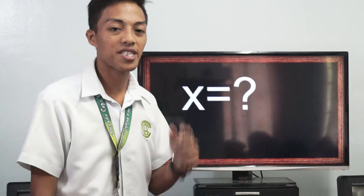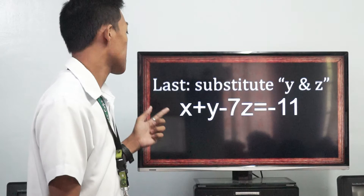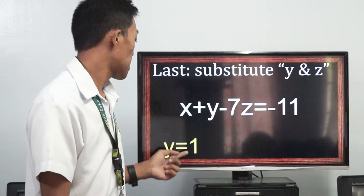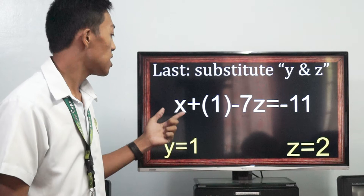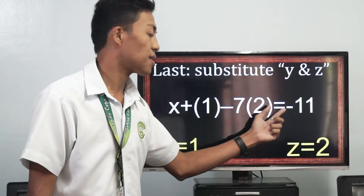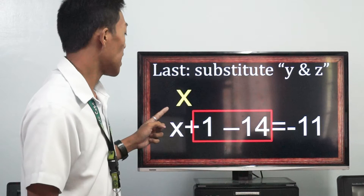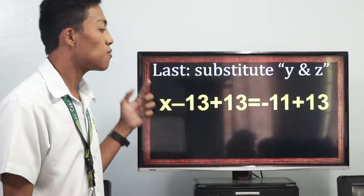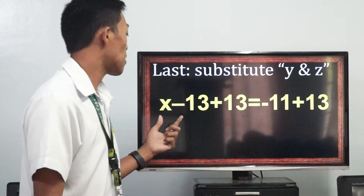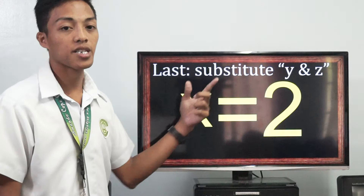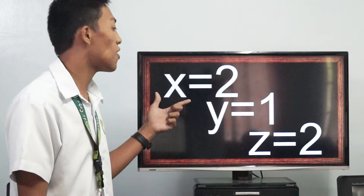The value of x is still unknown, so let's find x. Substitute the values of y and z into our first equation: x plus y minus 7z equals negative 11. With y equals 1 and z equals 2: x plus 1 minus 7 times 2 equals negative 11, so x plus 1 minus 14 equals negative 11, giving x minus 13 equals negative 11. By using the addition property of equality, let's add 13 to both sides: x minus 13 plus 13 equals negative 11 plus 13. So the answer is x equals 2. We now have z equals 2, y equals 1, and x equals 2.